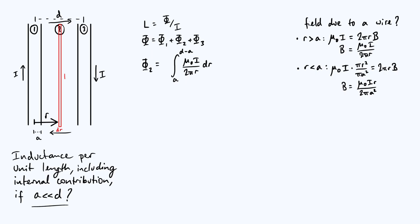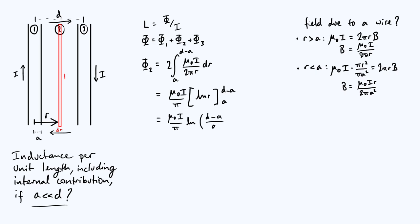We've only considered the field due to one wire. To add the contribution of the second wire, we multiply by 2 — by symmetry and the right-hand rule, the field due to both wires points into the screen in region 2, so they contribute identical amounts of flux. Taking out the constant factor μ₀I/π and integrating 1/R gives the natural log of R, evaluated from A to D minus A, yielding μ₀I/π × ln((D−A)/A). Applying our approximation A << D, this is approximately μ₀I/π × ln(D/A).